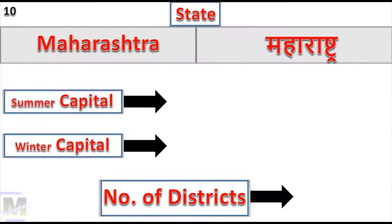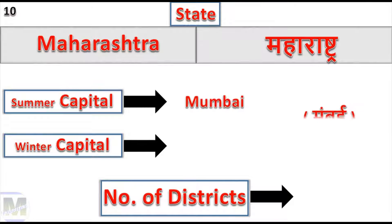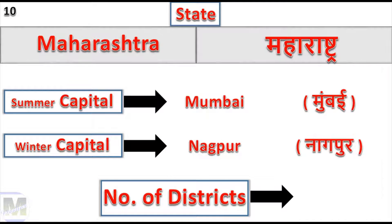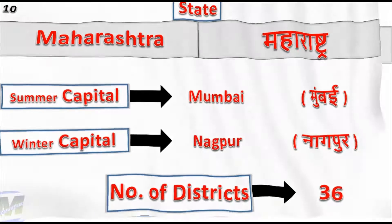Maharashtra: Summer Capital Mumbai, Winter Capital Nagpur, Number of Districts: 36.